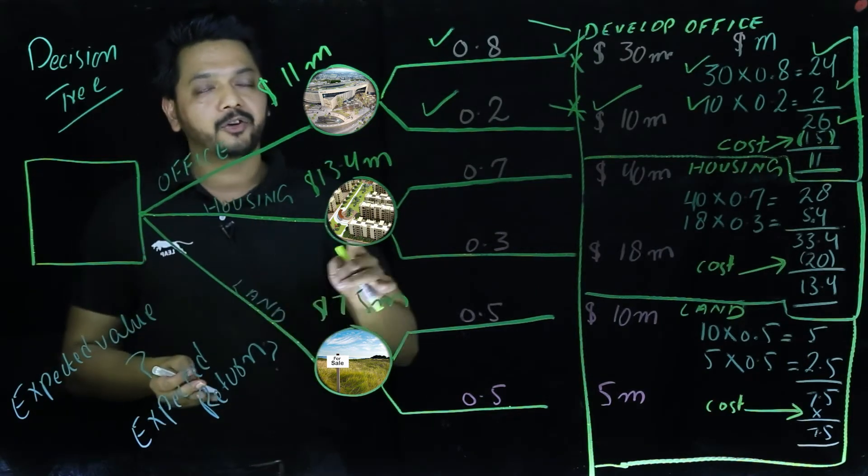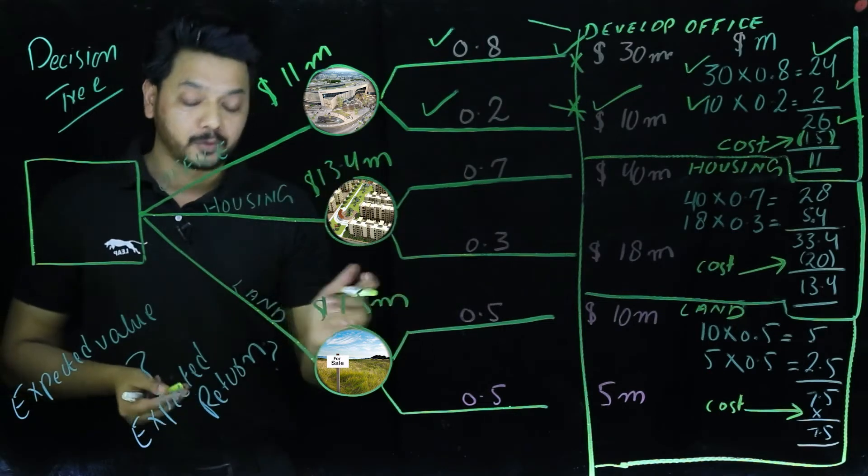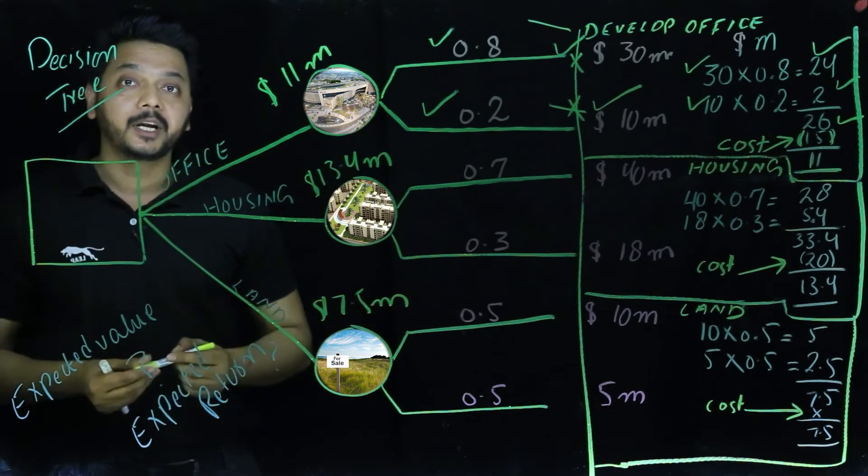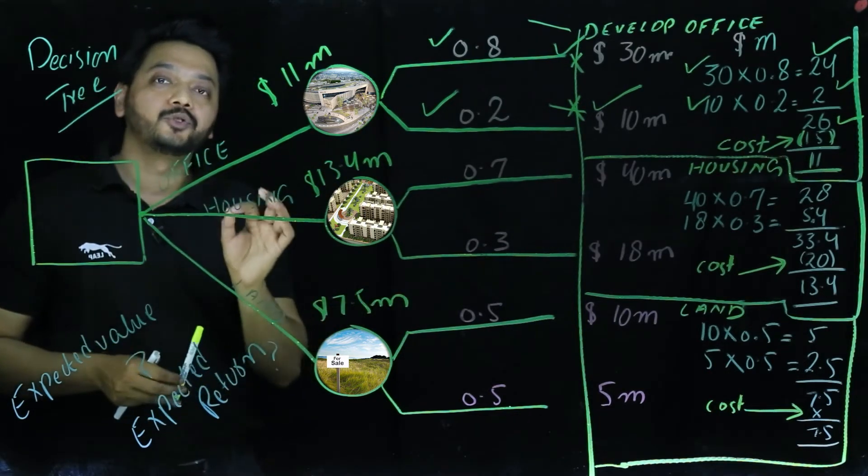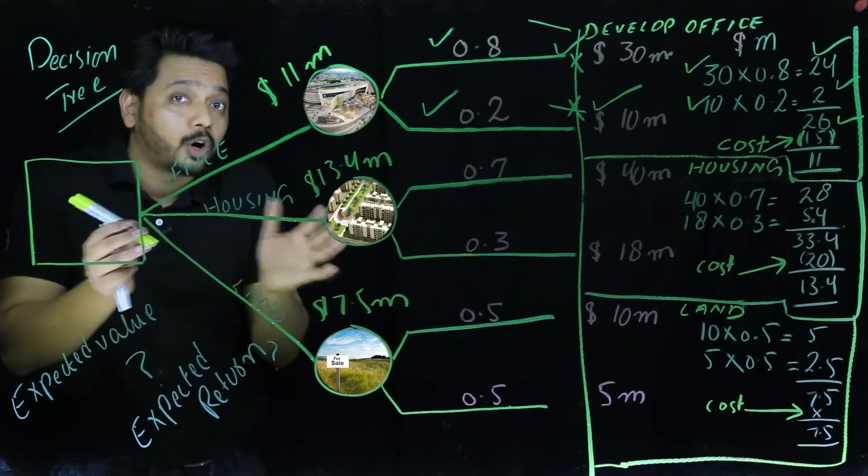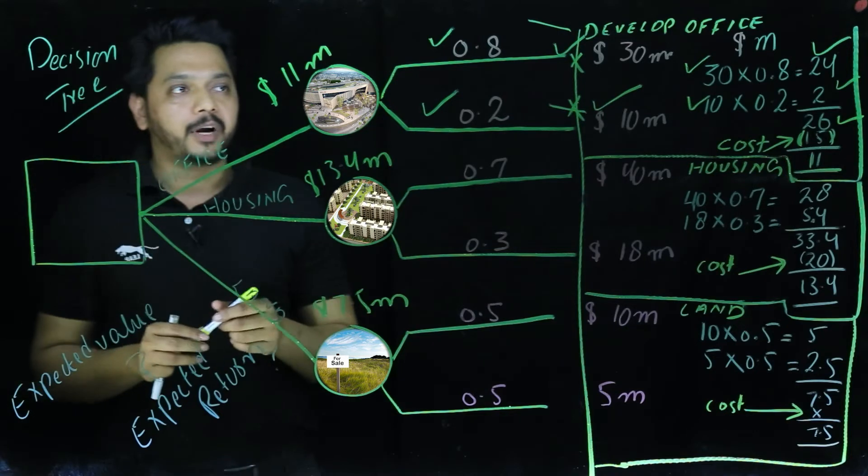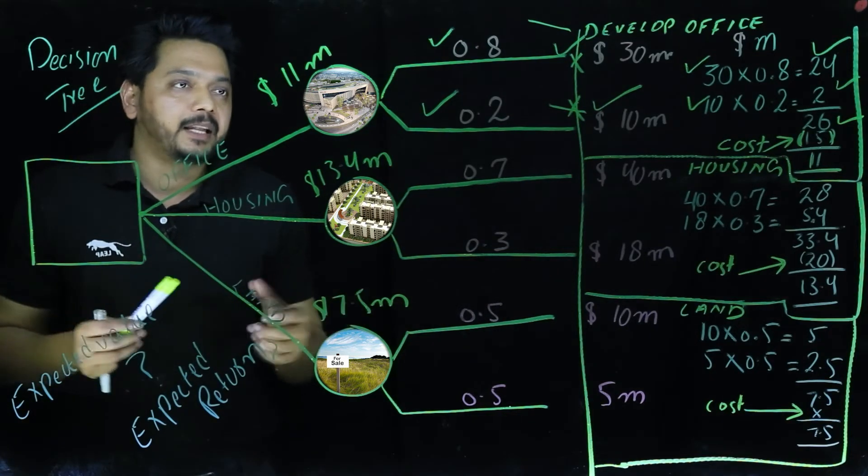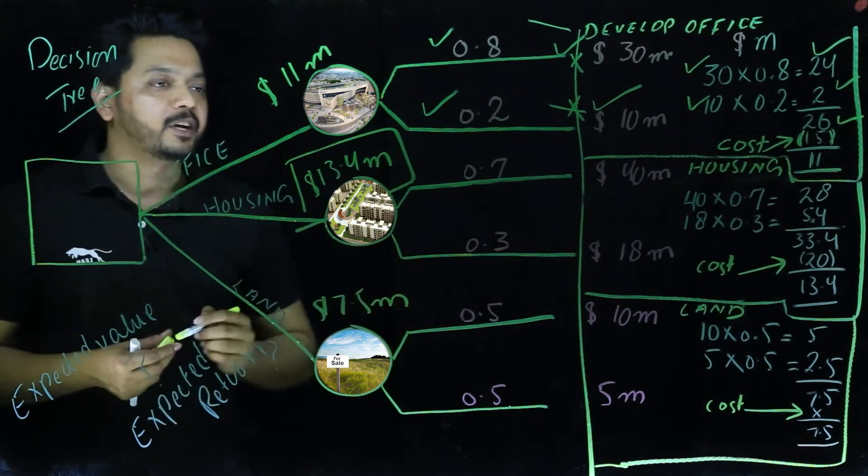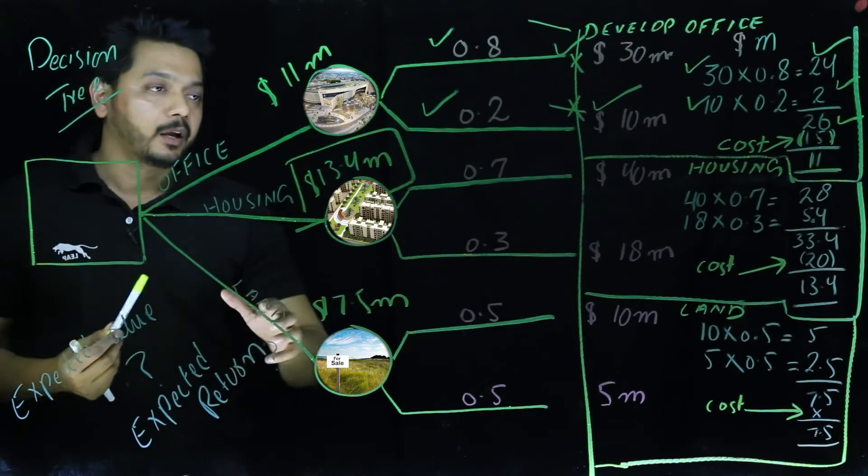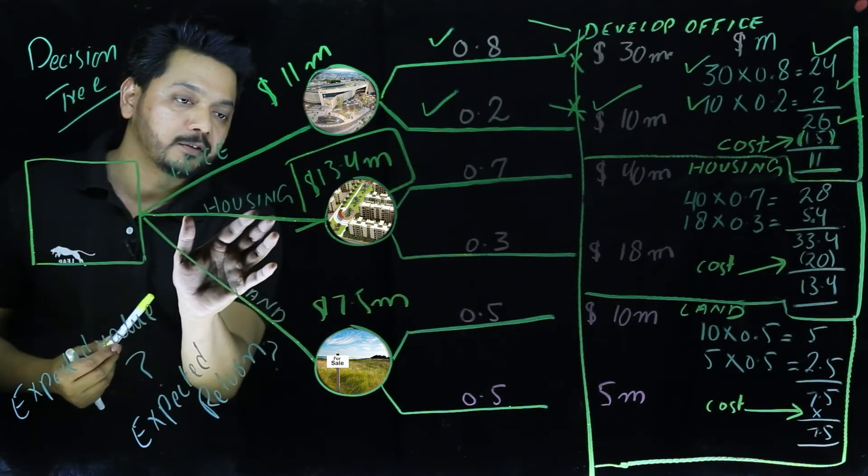Since decision tree analysis gives us a quantitative analysis, one of the limitations of decision tree analysis is that it gives you a quantitative analysis, it does not touch the qualitative analysis. So when it comes to quantitative part of it, we could easily say that the maximum expected return that we are getting here is from building housing scheme.